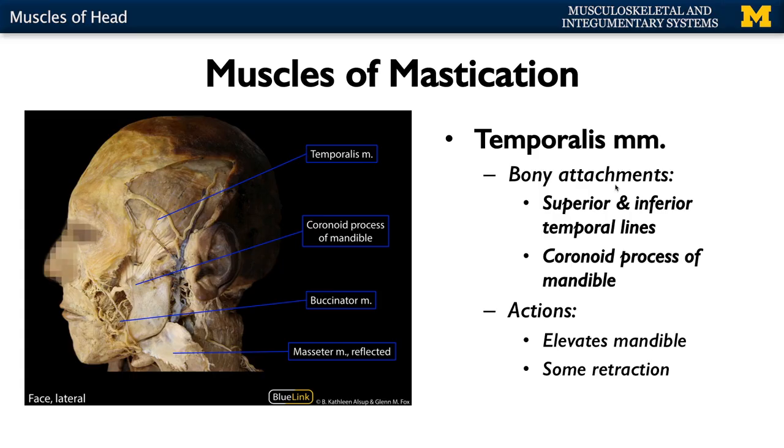Let's start with the temporalis muscle. This is where bony attachments come in — we talked previously about your superior and inferior temporal lines. If you clench your jaw, you can feel your temporalis muscle contract. It originates at your temporal lines and moves down to the coronoid process, which is anterior to the mandibular condyle. This is the second most powerful muscle of mastication and plays a big role in powerful elevation — closing of the mandible — as well as retracting or bringing the chin back into anatomical position.